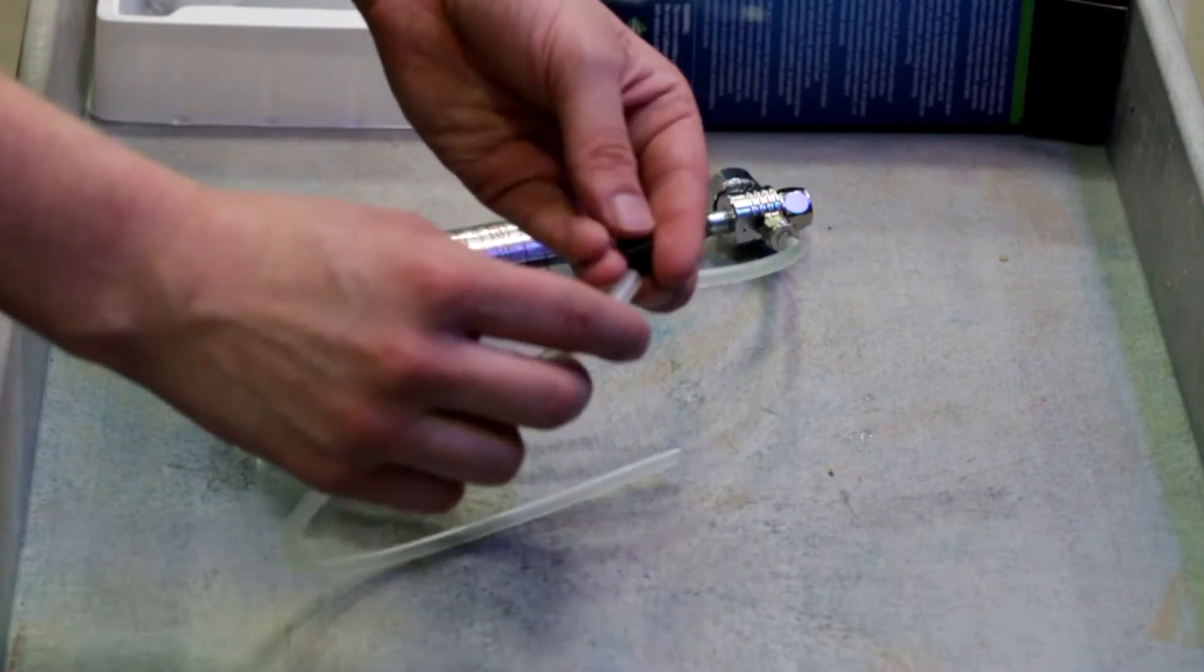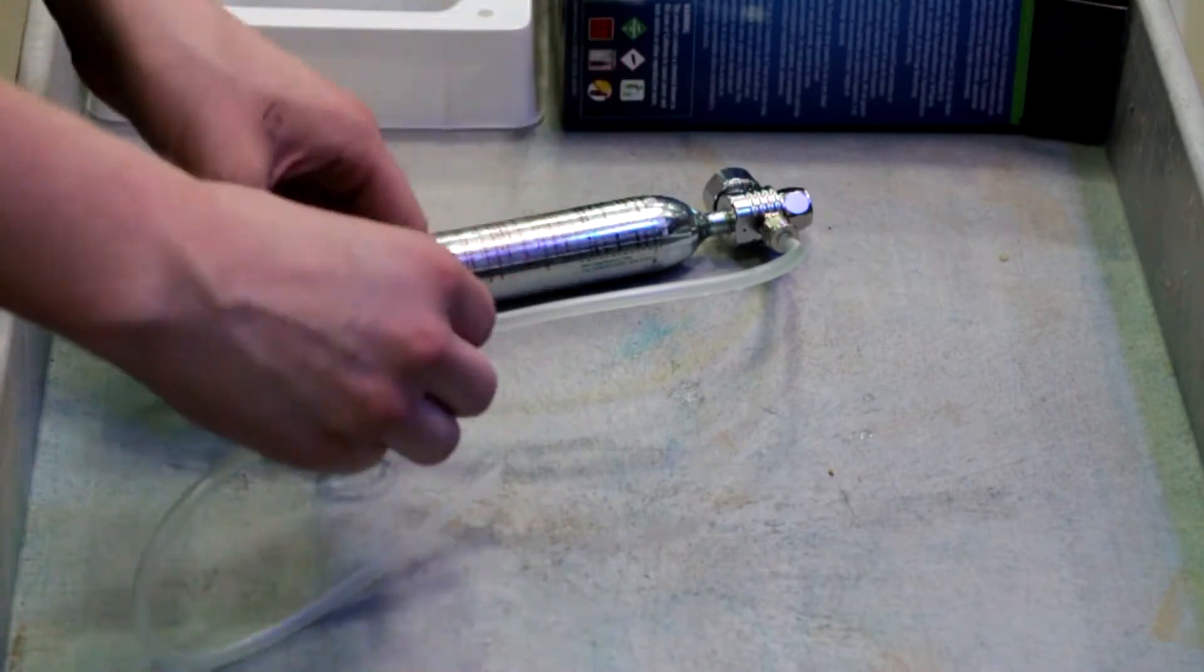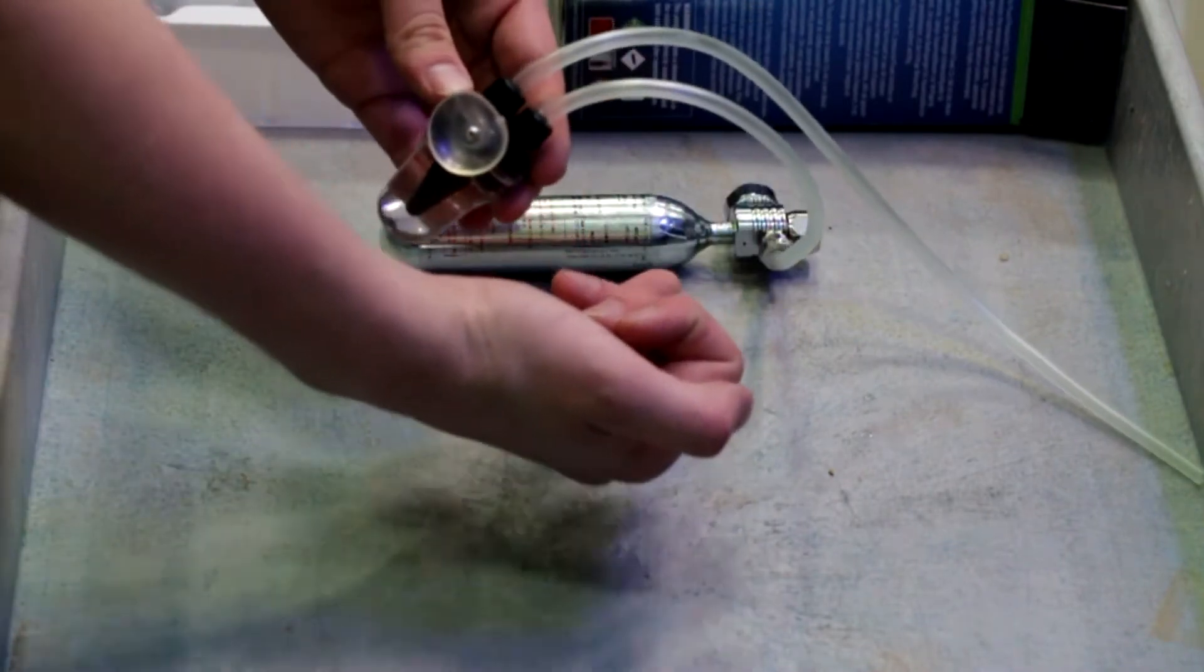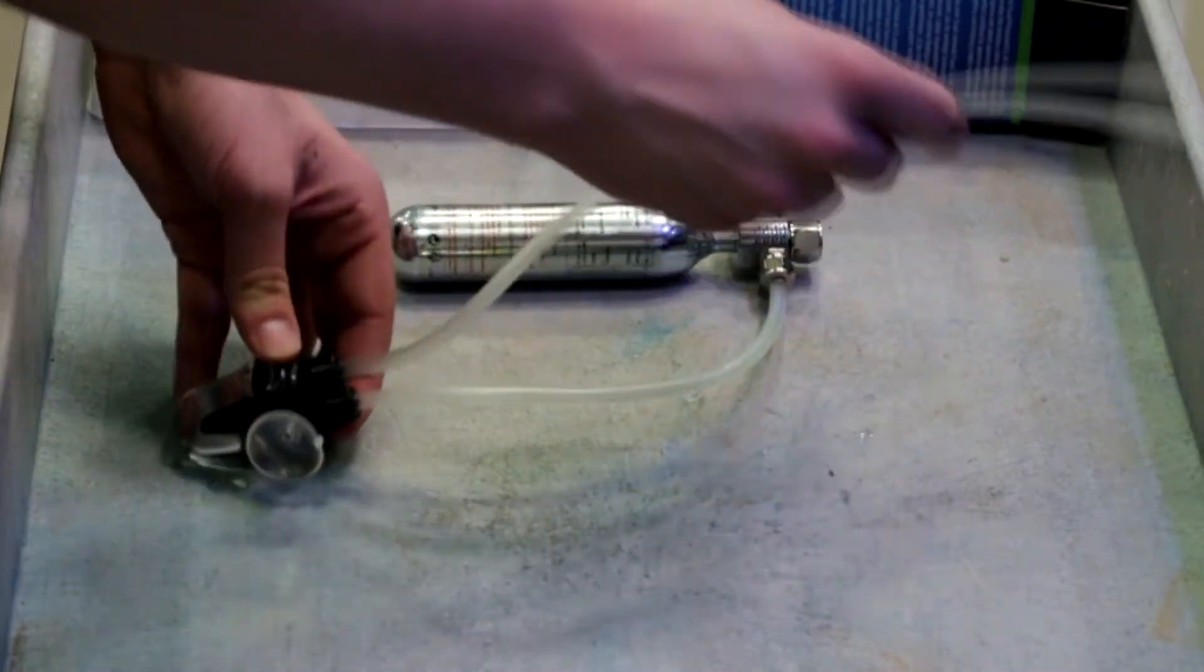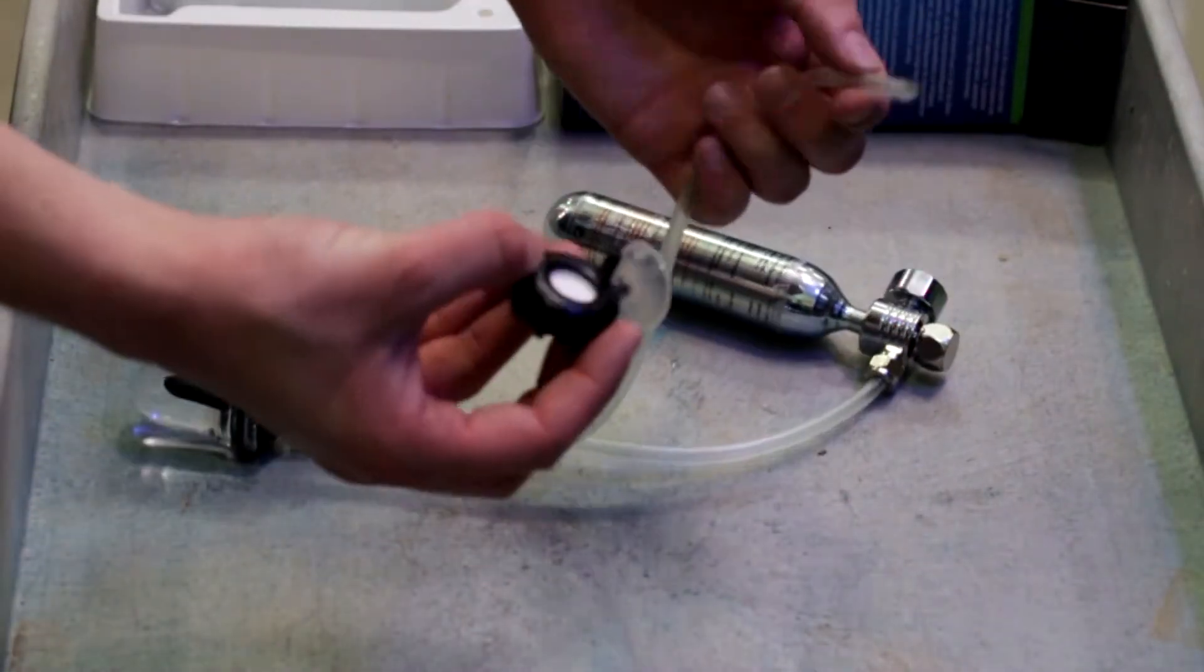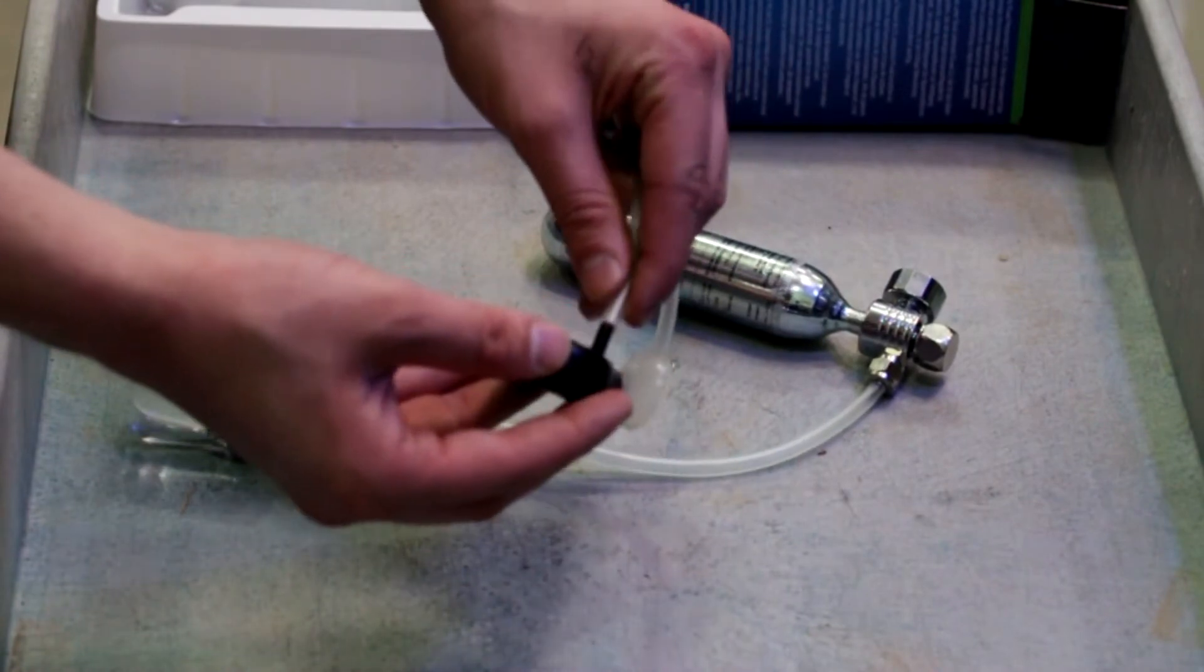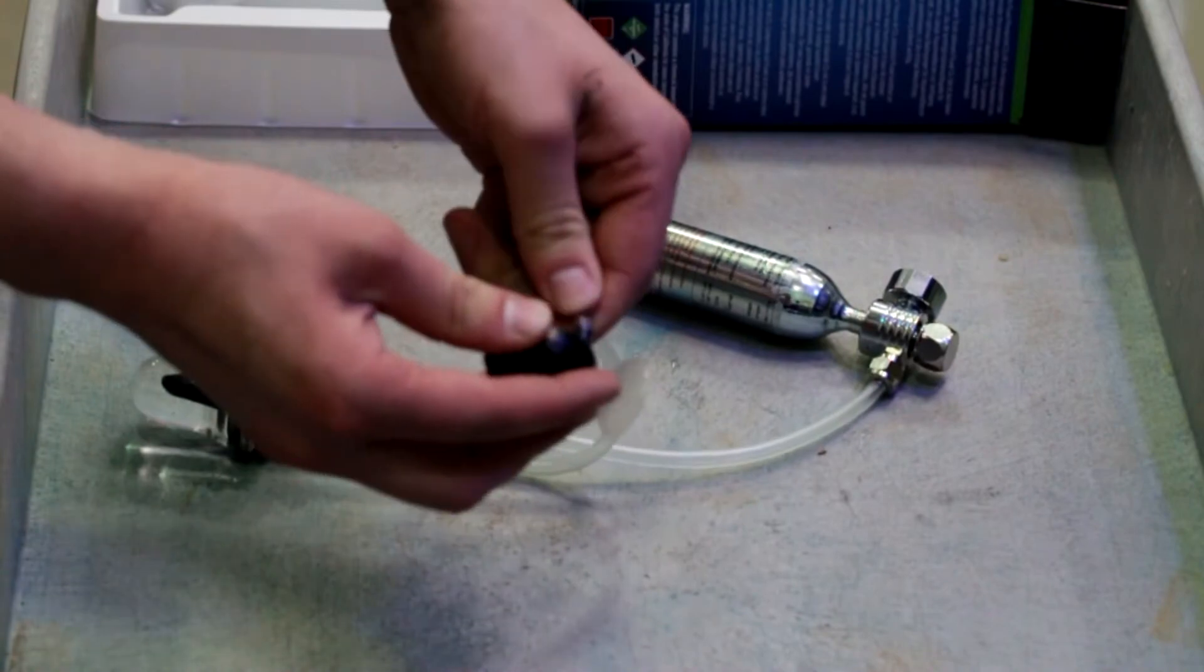This side of tubing attaches from the bubble counter onto the diffusing disc. So from the regulator to the bubble counter, and then this end goes to the diffuser. This one's pretty easy—the last end of the tubing goes onto the nipple. Make sure it's nice and secure. It doesn't have to be anything too tight.